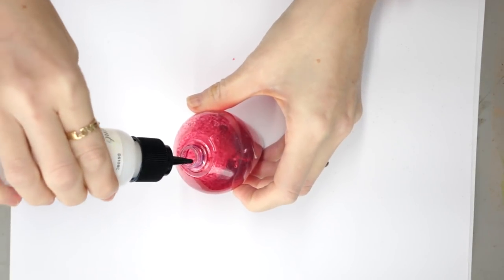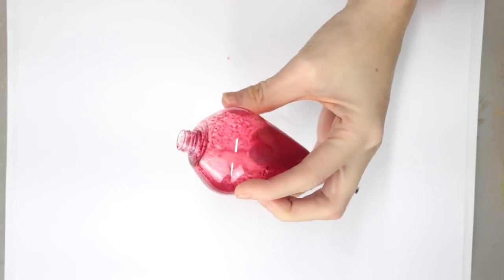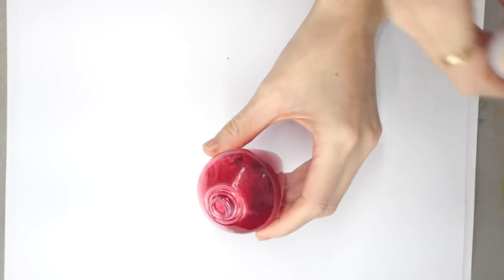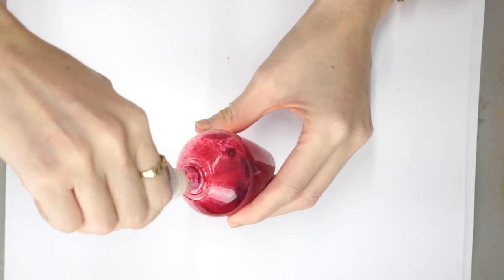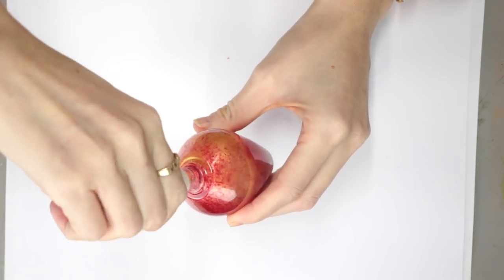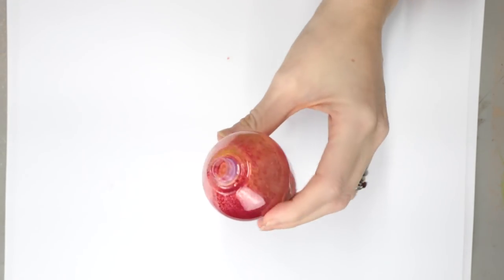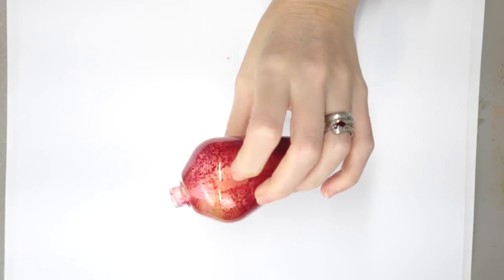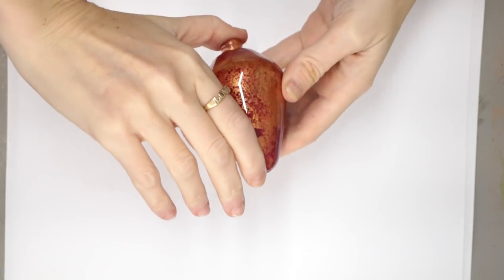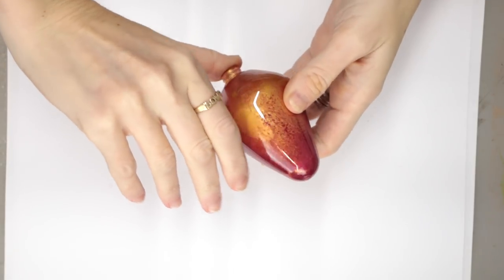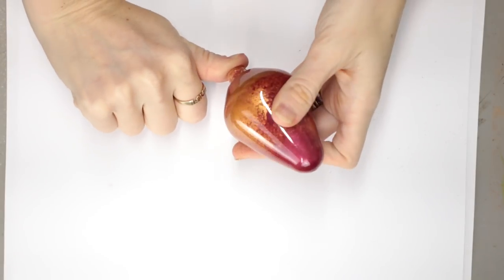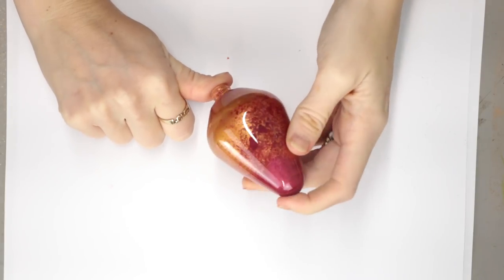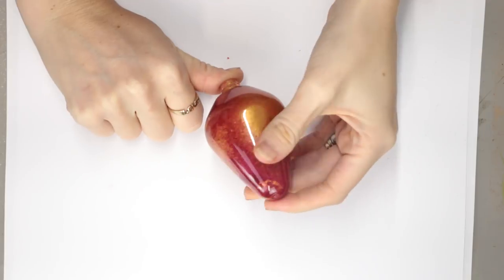Then I'm going to get a little bit more of my adhesive and again start moving that. And then I'm going to come in with the gold and spray that in there. And I'm just going to keep moving it all around. It's going to be completely unique because the colors you use and the pattern will be completely unique. So it's a great way to create unique baubles.